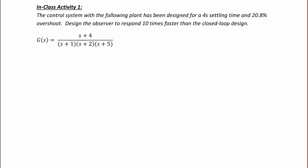In class activity 1, the control system with the given plant has been designed for a 4-second settling time and 20.8% overshoot. Design the observer to respond 10 times faster than the closed-loop design. The first thing we need to do is derive the state equations from the transfer function and find our A, B, C, and D matrices. We have done this in prior lectures, so here I will just give the final result.